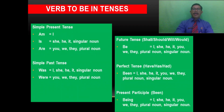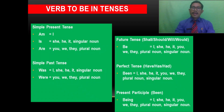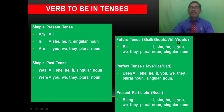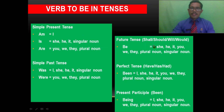Future tense — kejadiannya akan terjadi di masa depan, belum terjadi. Biasanya menggunakan shall, should, will, atau would. Present future tense menggunakan shall atau will. Past future tense menggunakan should atau would. Ketika to be masuk ke dalam future tense, maka to be-nya berubah menjadi 'be', diikuti oleh semua subjek: I, she, he, it, you, we, they, plural noun, singular noun.